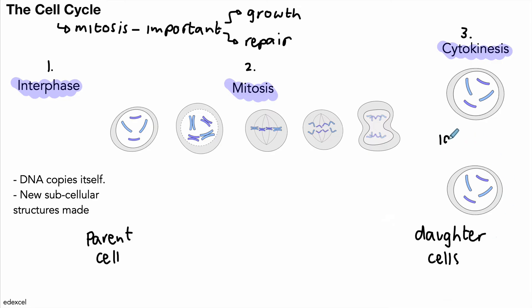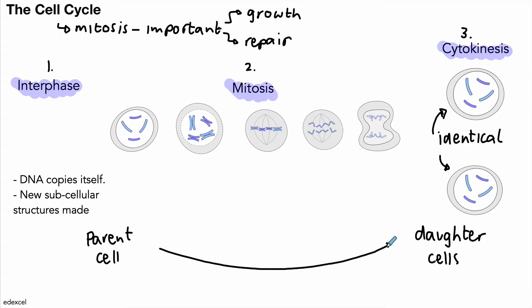It's very important to remember that the daughter cells are identical to each other — they are genetically identical, and therefore they are clones. Not only are they identical to each other, they are also identical to the parent cell. So the daughter cells are identical to the parent cells, and that's a very important feature of mitosis.